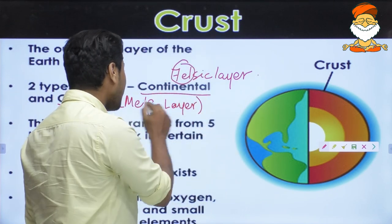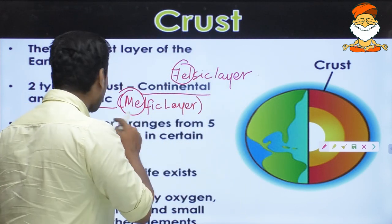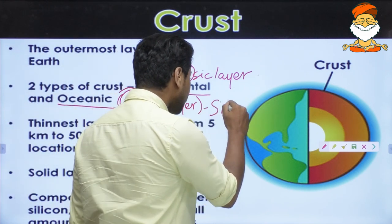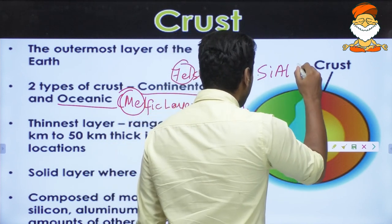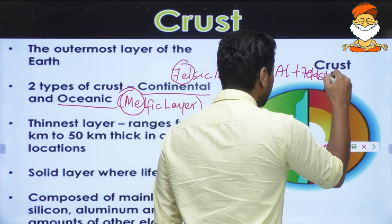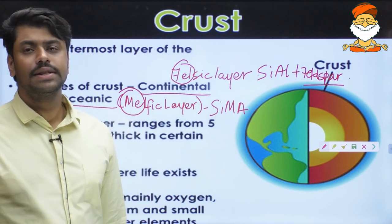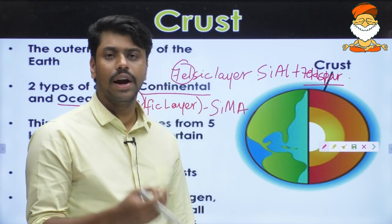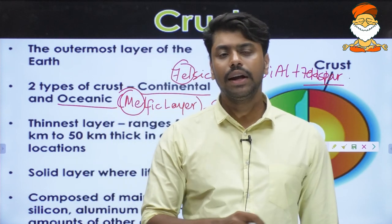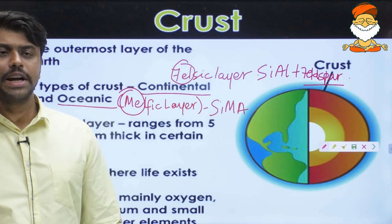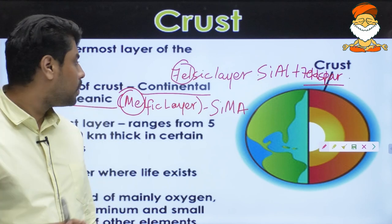Why do we call them felsic and mafic? The oceanic crust is composed of SEMA — silica and magnesium. The continental crust is composed of SIAL — silica and aluminium — plus feldspar. Since the continental crust has a lot of feldspar, we call it the felsic layer. In the oceanic crust, there is less pressure and temperature, so less crystal formation compared to the mantle, even though both contain silica and magnesium.